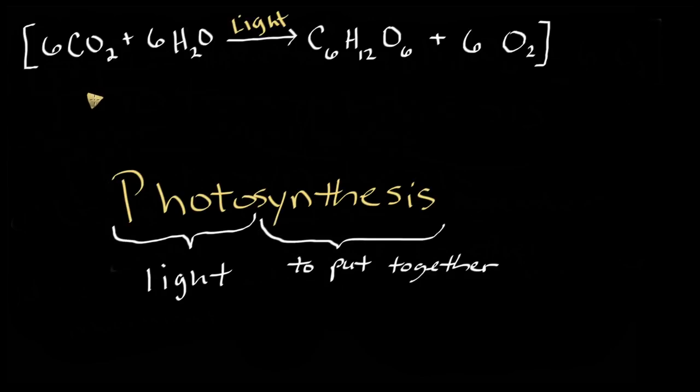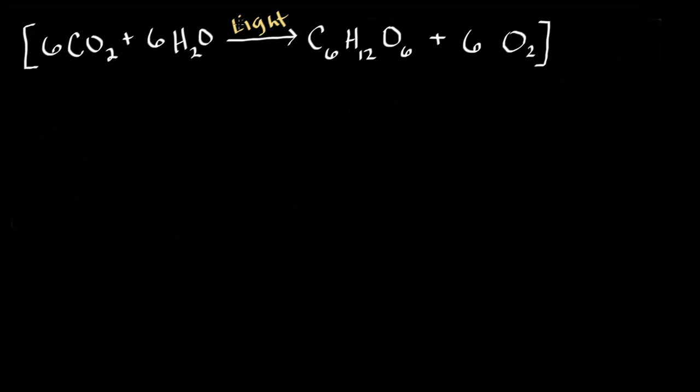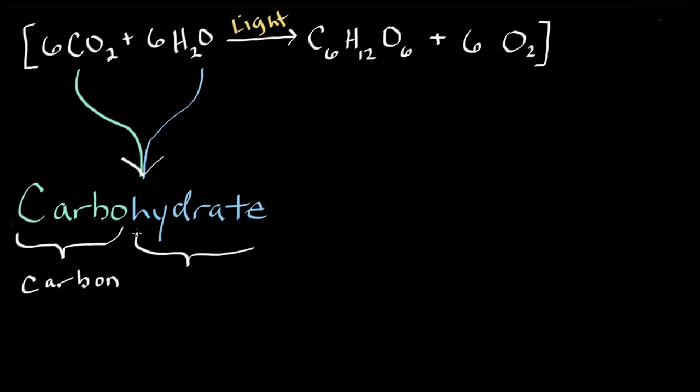So sticking with our analogy, the ingredients for photosynthesis are just carbon dioxide from the atmosphere and water from the ground. With light to do the heavy lifting, carbon dioxide and water are put together to produce a carbohydrate, which literally means watered carbon.